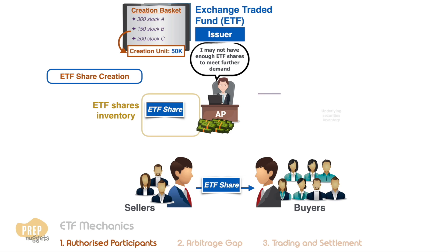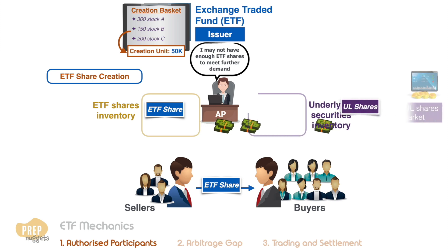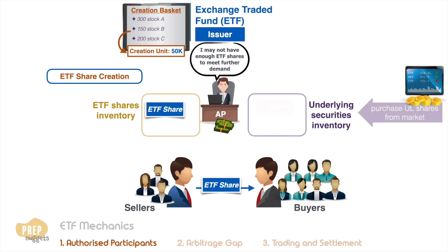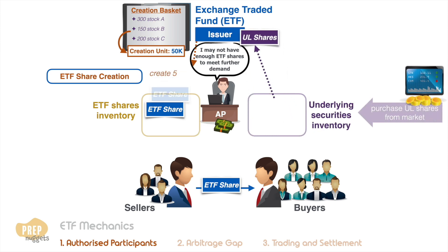The AP will have to purchase the specified number of underlying securities from the stock market and exchange them for 50,000 ETF shares.